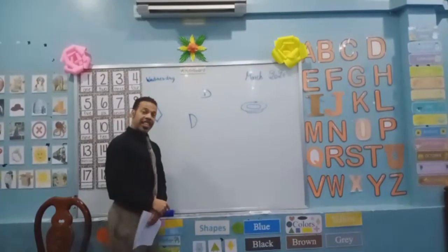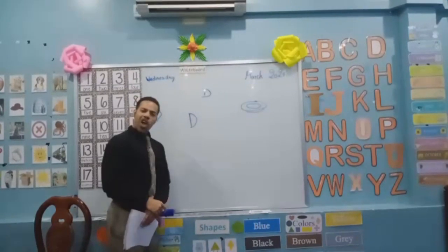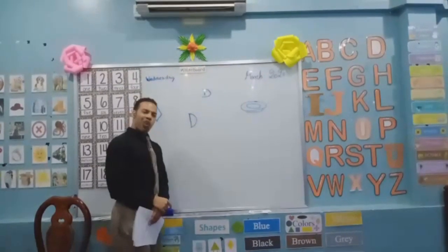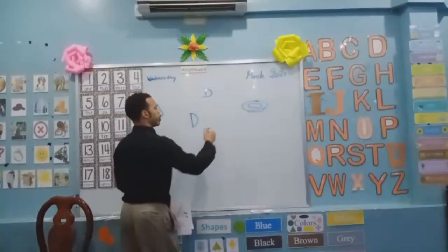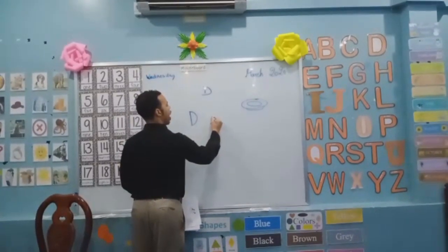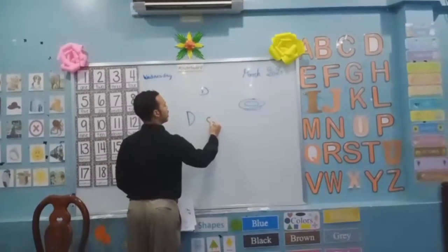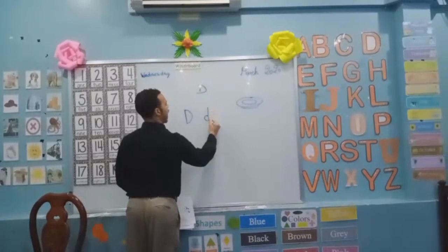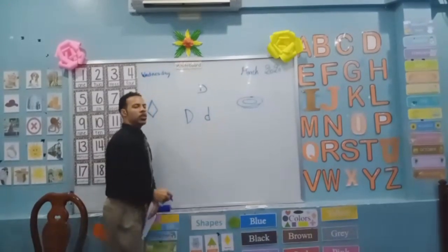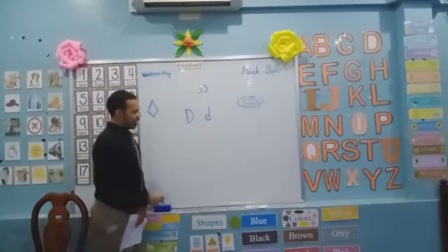After big D, there's small D. Small D. Let's practice small D. We start around half circle. Up and then down. Small D.